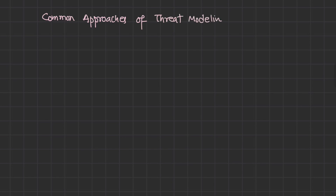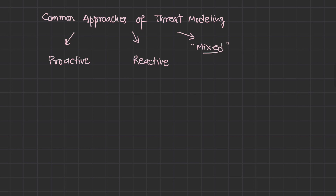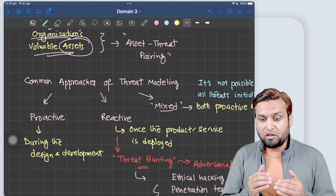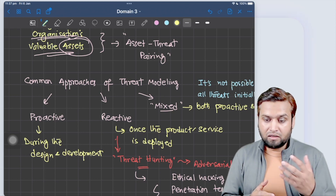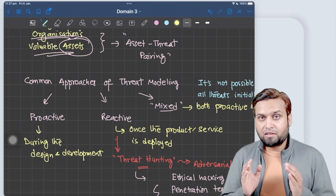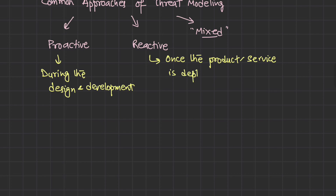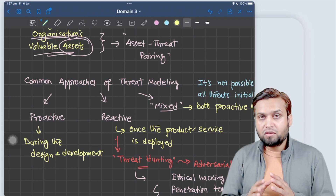What are the common approaches of threat modeling? We can do threat modeling either proactively or reactively, and most of the time we have a mix of both. Proactive threat modeling is done during the design and development of a product, software, or when designing the security policy of an organization — essentially during the design and development of a security program. The reactive approach is done once the product and services are in production or deployed.